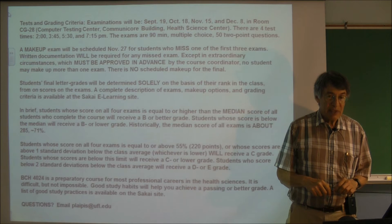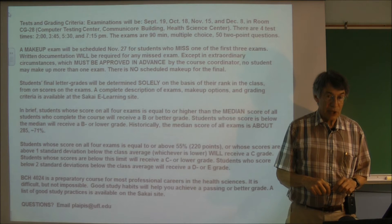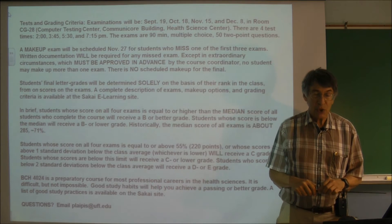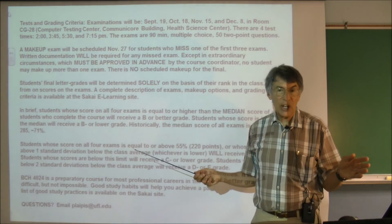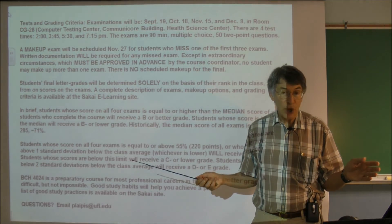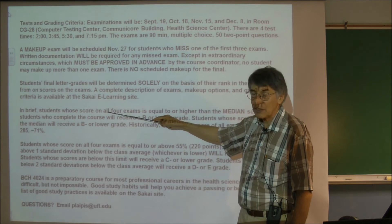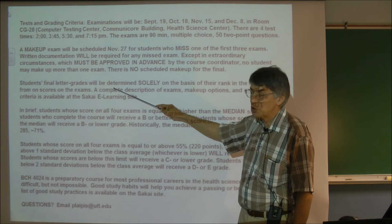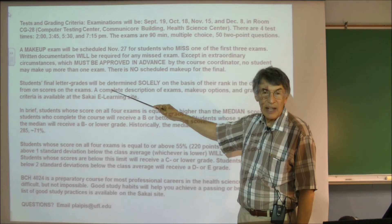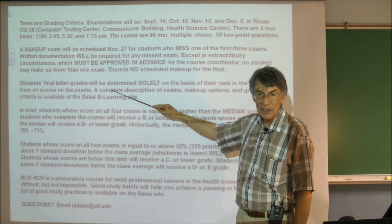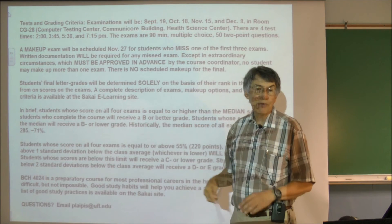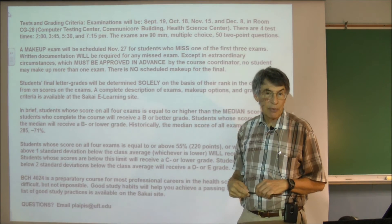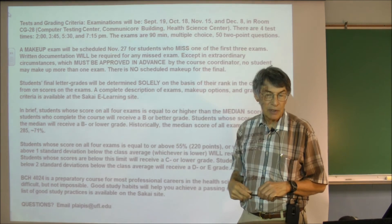If you're in the upper half of the class, you'll get a B or better. If you're in the lower half, you'll get a B minus or lower. Don't ask me what the cutoffs for A, A minus, or B plus are — I don't know. They depend on the rank of students who took the exams, and I won't know until the final is over. There are 700 students, and there will be three or four or more students at almost every possible grade point.